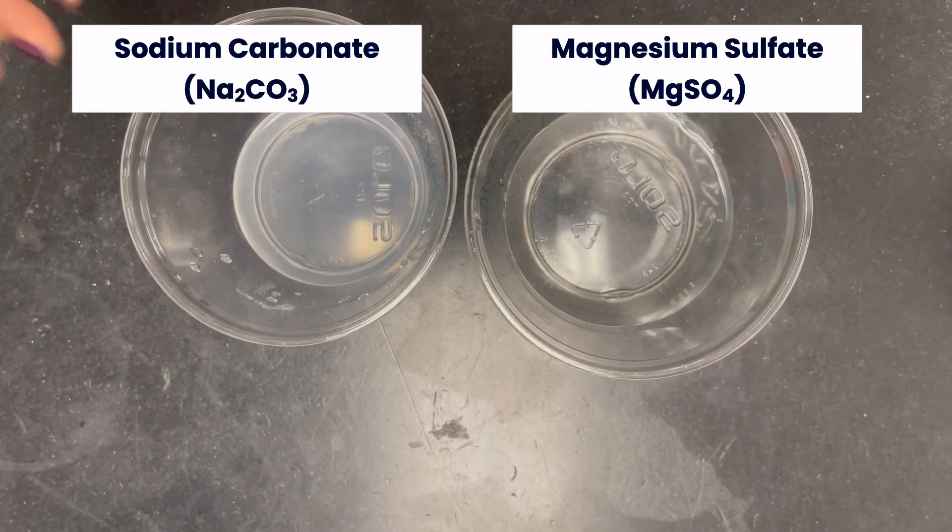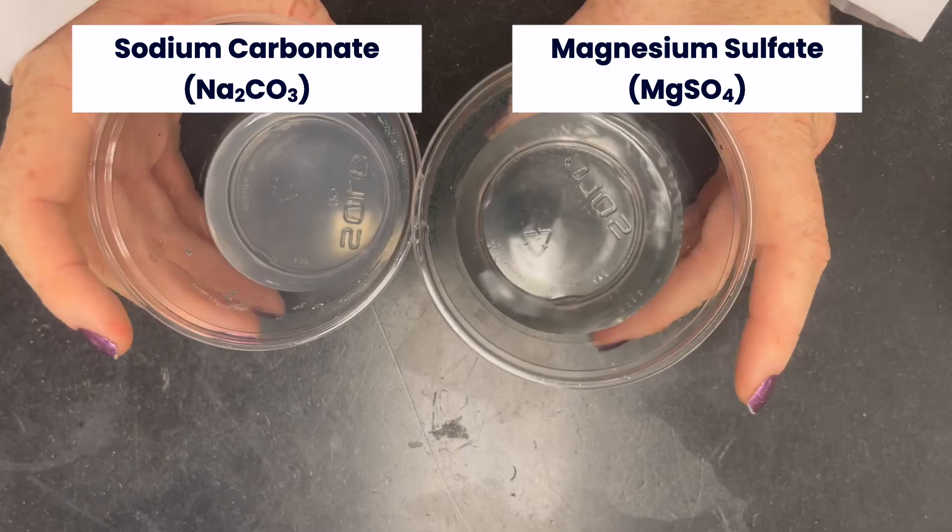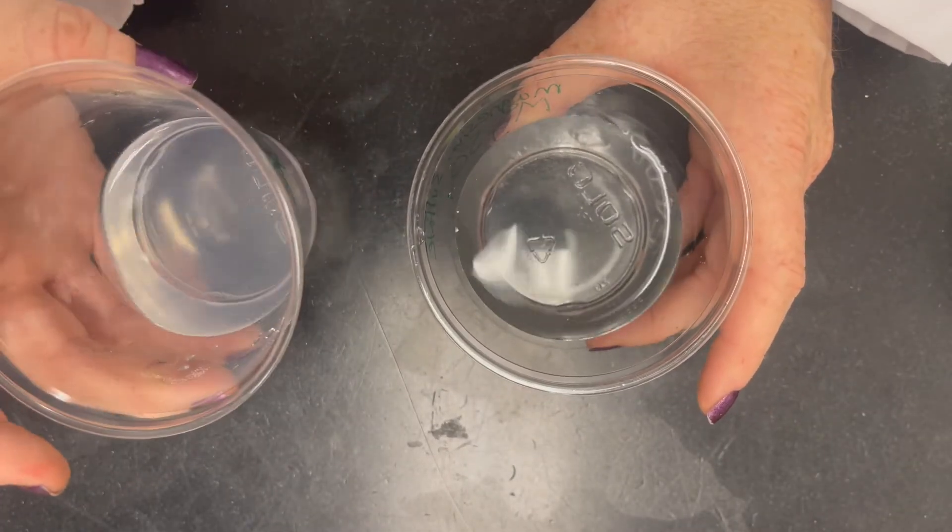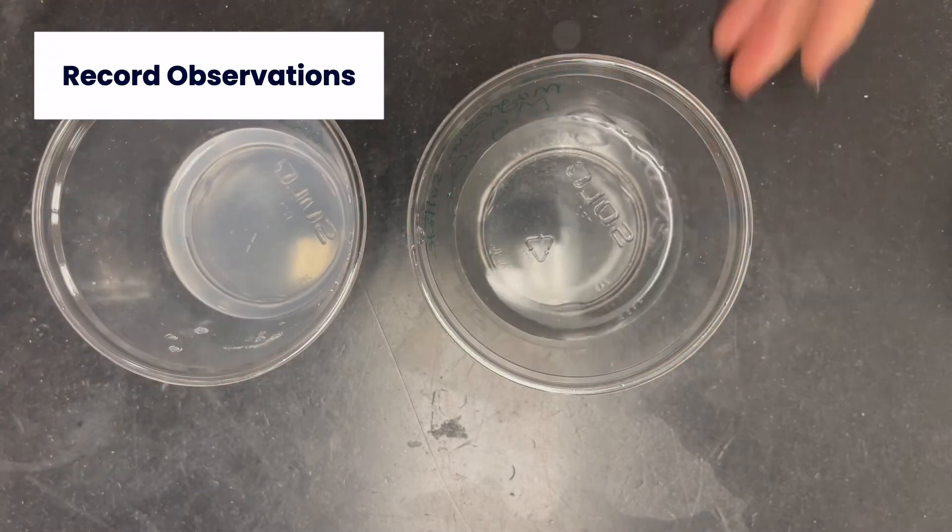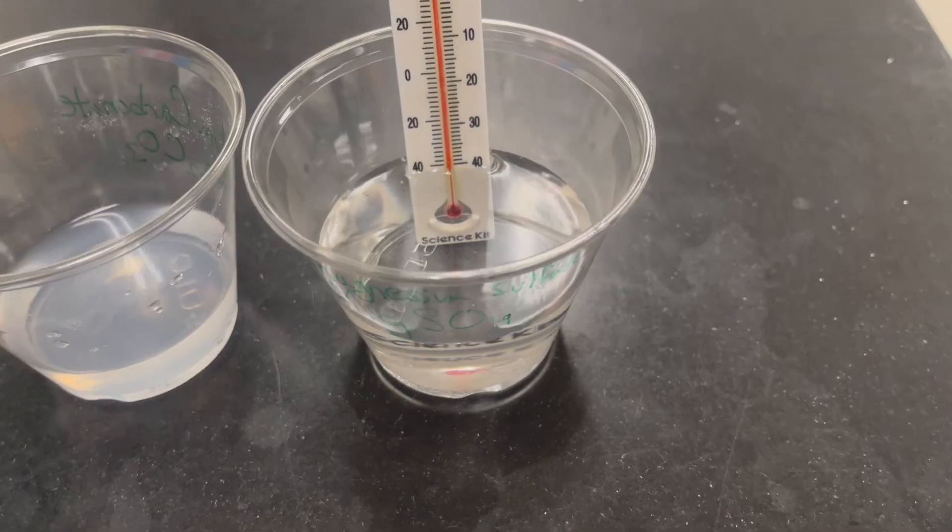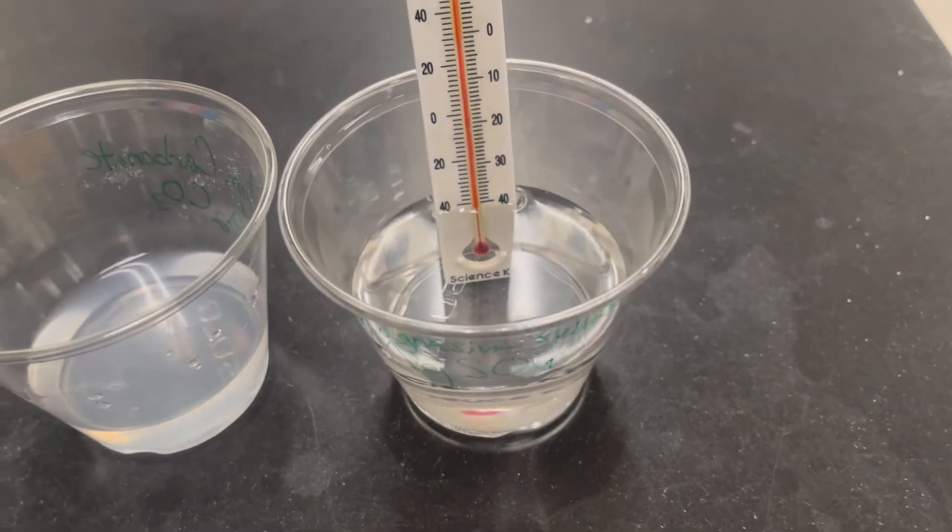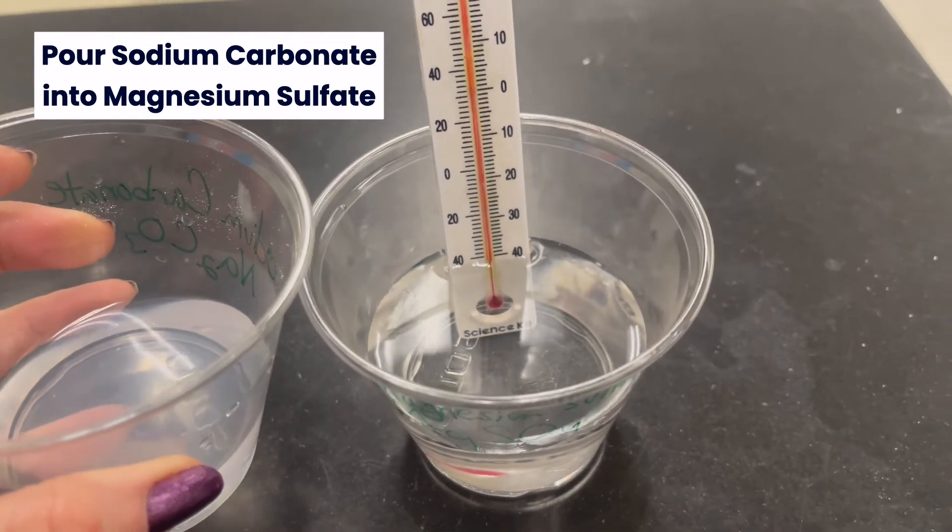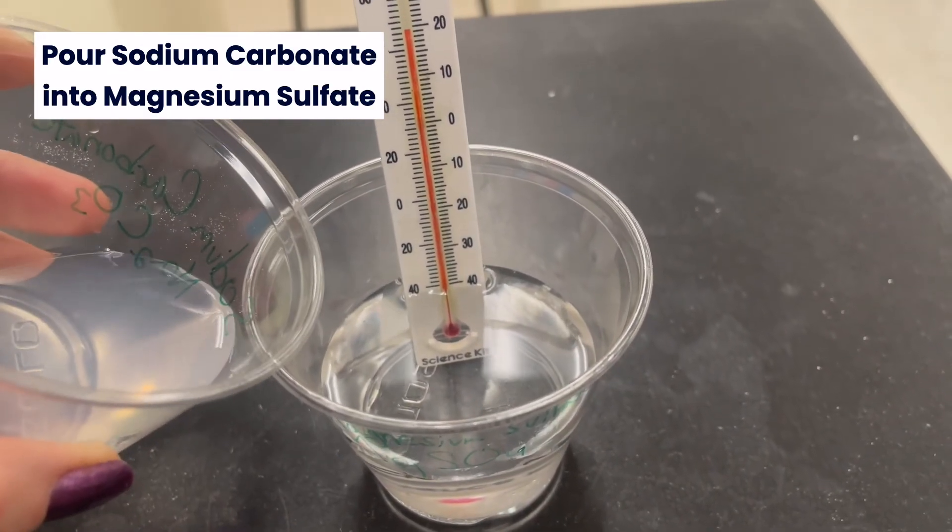So now we have Sodium Carbonate and Magnesium Sulfate in solution form. Record some observations. Then pour the Sodium Carbonate into the Magnesium Sulfate.